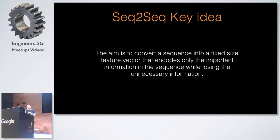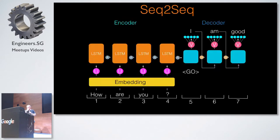The key idea is that the aim is to convert a sequence into a fixed-size feature vector. If we're looking at translation, we're talking about a sequence of words and we try to get that into a fixed-size feature vector, which can then be used to predict what that is going to be translated to in a different language. It's basically got to remember the important things in that first sequence and also lose any unnecessary information.